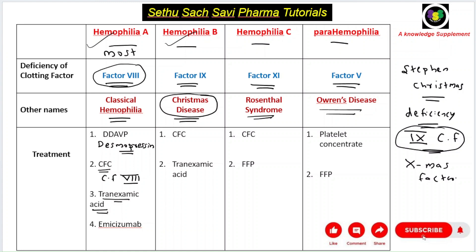Additionally, the anti-fibrinolytic drug tranexamic acid can be given for Hemophilia A. Recently, a monoclonal antibody called emicizumab has been introduced for Hemophilia A — it can basically replace the function of clotting factor 8. So for Hemophilia A: desmopressin for mild cases, clotting factor 8 concentrate as best choice, tranexamic acid, or emicizumab.